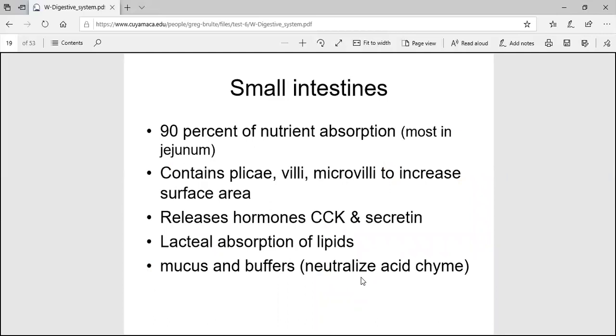Small intestines. Most of the absorption is done in your small intestines, maybe 90% of it. But of that, most is done in the jejunum. There are plica, villi and microvilli. Don't worry about these hormones CCK and secretin, you'll get that in physiology. Lacteals we talked about last test, they absorb lipids and fat soluble vitamins. Don't forget you got mucus and buffers in there to help neutralize that acid chyme.